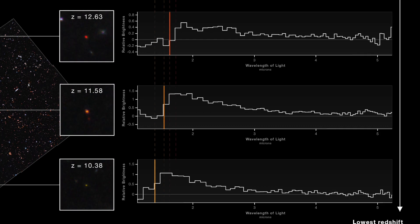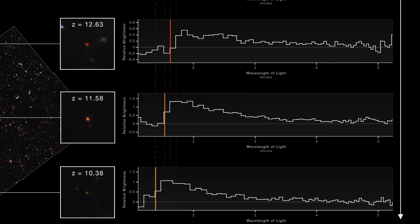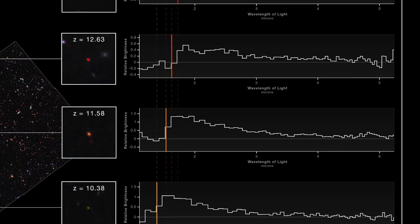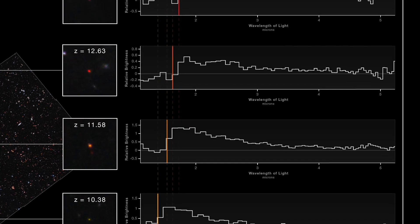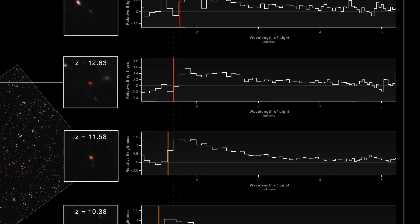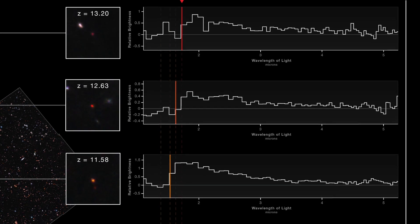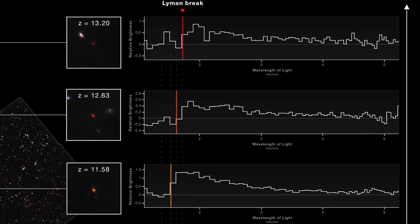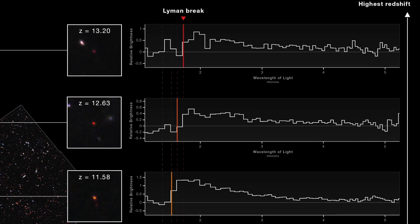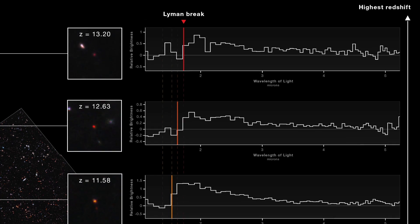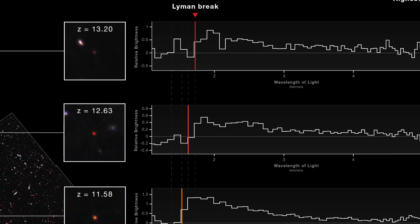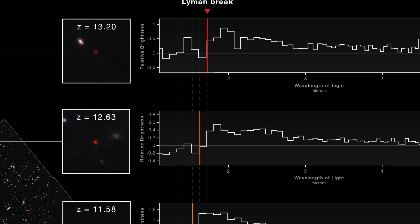In James Webb's images, galaxies in the early universe can be distinguished by a characteristic feature of their emission spectrum. Astronomers look for faint galaxies that are visible in the infrared, but whose light cuts off sharply at a critical wavelength called the Lyman limit. This is the first time galaxies have been discovered just 350 million years after the Big Bang.